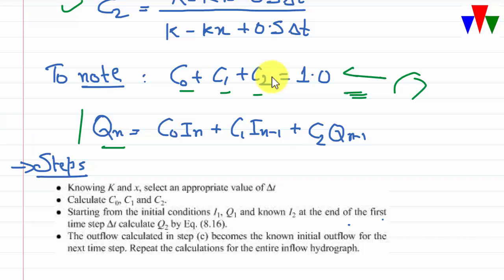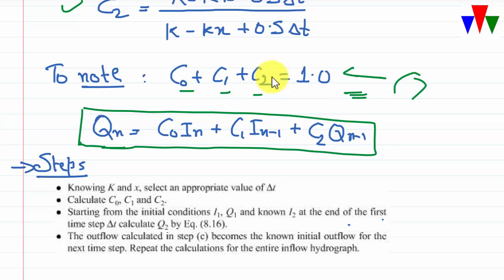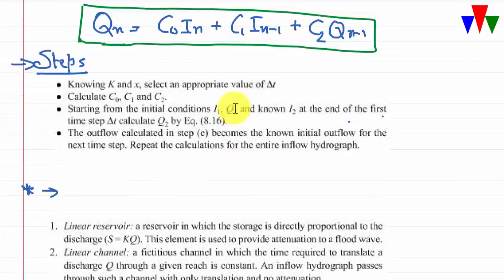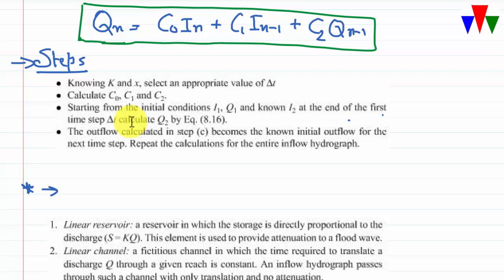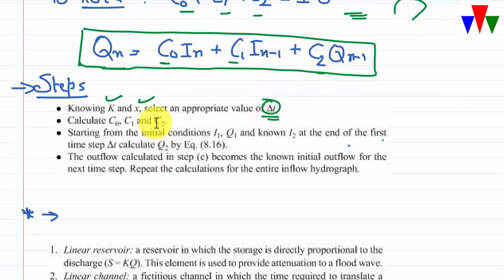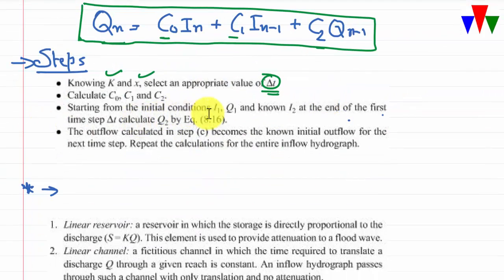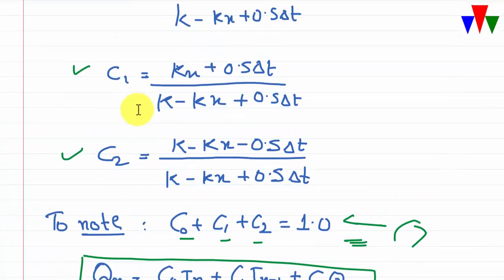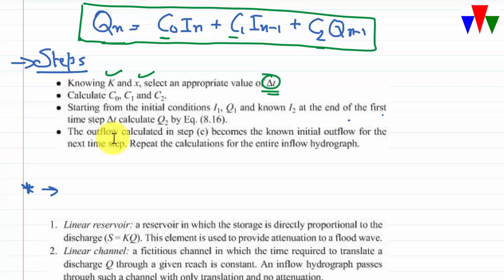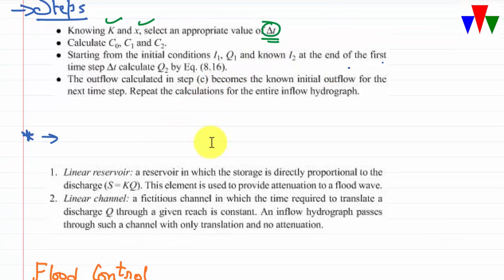The steps for Muskingum routing are: select an appropriate time interval Δt given known K and x; calculate coefficients C0, C1, and C2; starting from initial conditions I1 and Q1, calculate Q2 at the end of the first time step; then Q2 becomes the known Q for the next step to find Q3, Q4, and so on, repeating for the entire flood hydrograph.